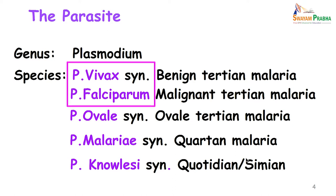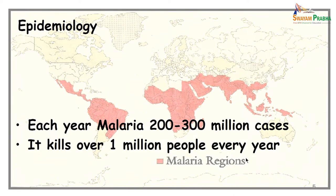Plasmodium vivax and falciparum are the most common ones seen in India. Each year there are approximately 200 to 300 million cases of malaria reported worldwide, and it kills over 1 million people every year. India is one of the places where malaria is quite predominant.